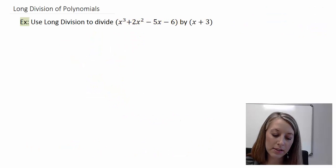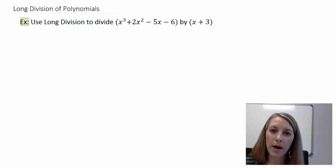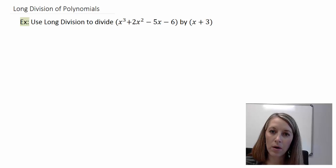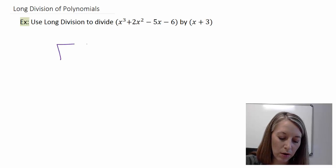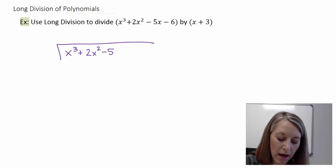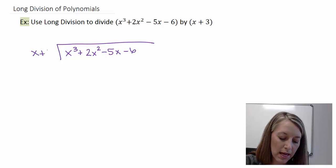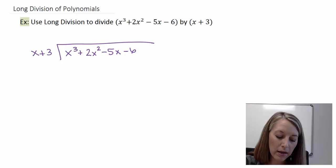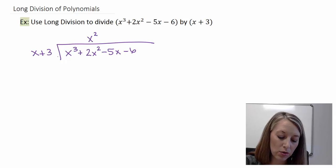I have another example of using long division. Since I've shown you one example, I suggest you pause the video and see if you can work this one on your own. The process is the same, so let's work through it a little faster. My first polynomial goes inside my box, and my divisor of x plus 3 goes outside my box. X times what gives me x cubed? That's x squared. Make sure I right align it — I have two digits, so I right align it behind my second digit.